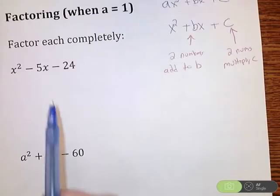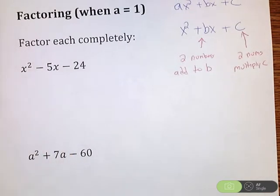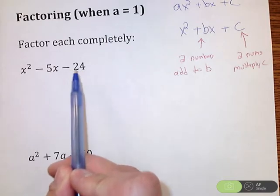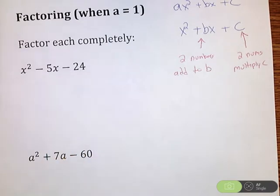So this first problem, I have x squared minus 5x minus 24. So I'm looking for two numbers that multiply to negative 24. Those same two numbers need to add up to be negative 5.